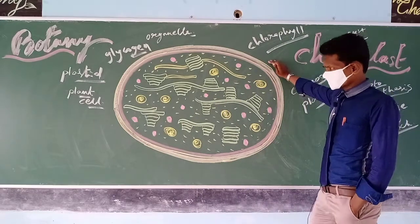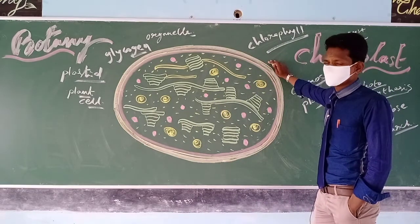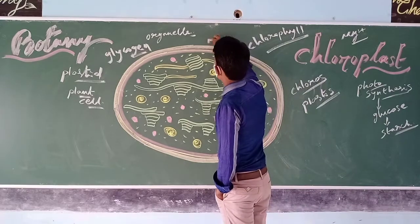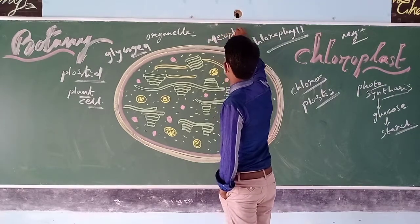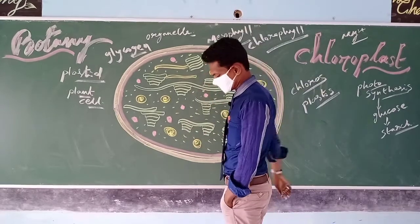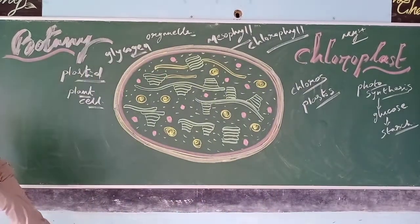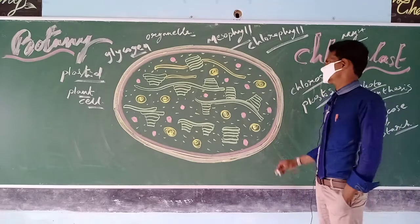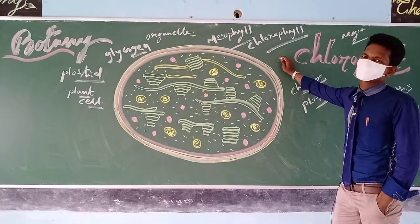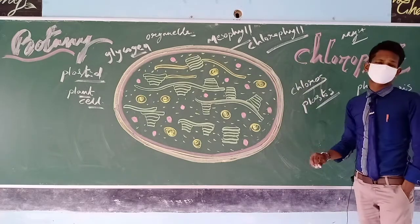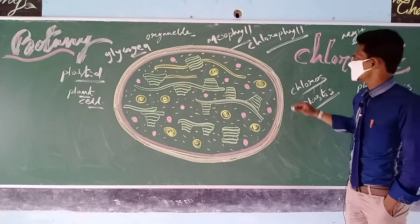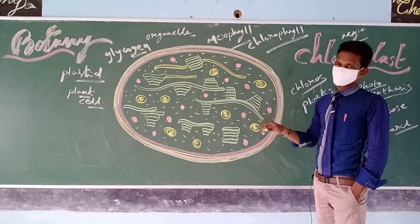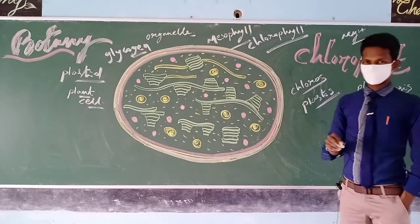Now we will discuss the structure of the chloroplast. Chloroplast is present especially in plants, inside the leaves, in the mesophyll tissue. The combination of palisade and spongy parenchyma together is called mesophyll tissue. In the mesophyll, especially in palisade tissue, the number of chloroplasts is greater than in the spongy tissue.